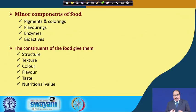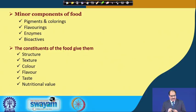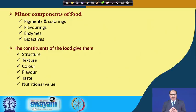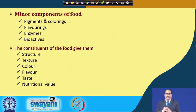All these constituents — the nutrients as well as the minor components of food — actually give food its structure, texture, color, flavor, taste and nutritional value. It is not only the content of these constituents, but also the manner in which these constituents interact in the food, that actually decides the texture, shape, size, color, flavor and so on.